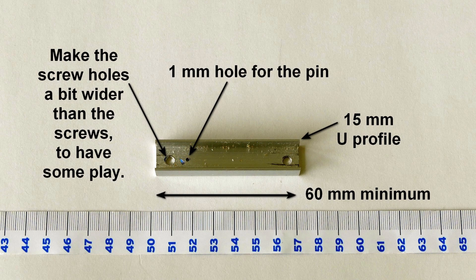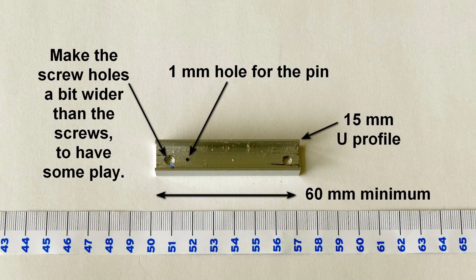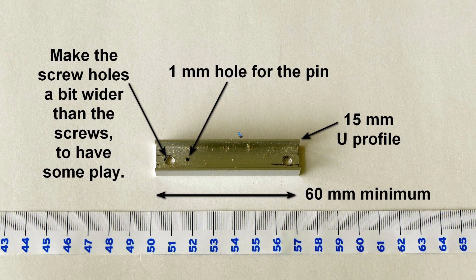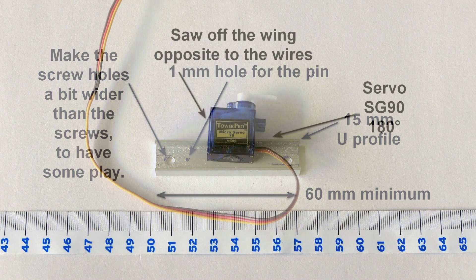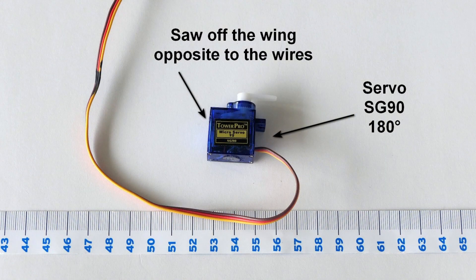If these holes are too close together, then you cannot drill the hole for that screw anymore in your table. This is all quite easy and cheap. It costs virtually nothing to mount a servo.